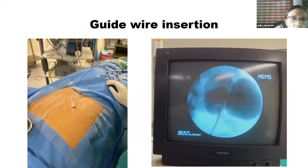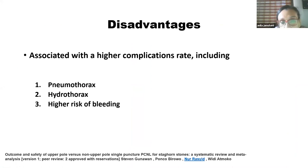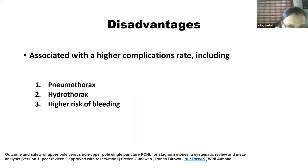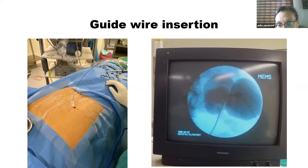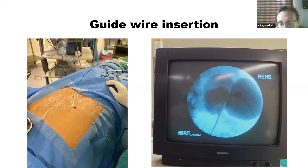After confirming the needle is inside the system, you place a guide wire. There is the ability to place a guide wire directly from the upper pole into the ureter.